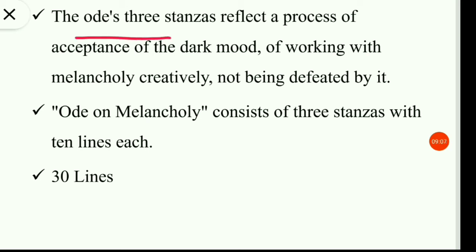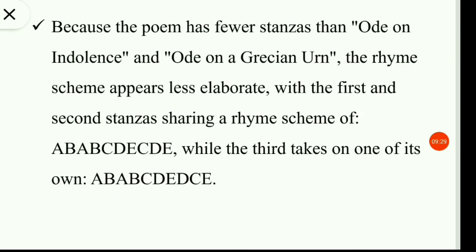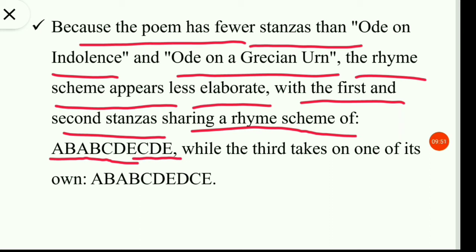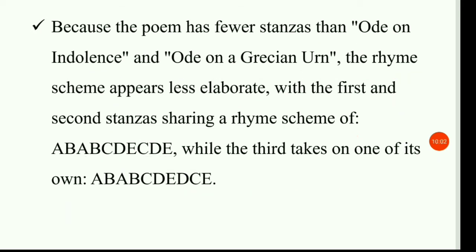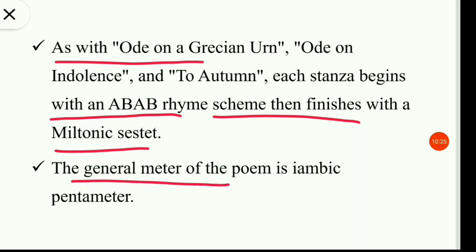The ode's three stanzas reflect a process of acceptance of the dark mood — of working with melancholy creatively, not being defeated by it. Ode on Melancholy consists of three stanzas with ten lines each, altogether 30 lines. The first and second stanzas share a rhyme scheme of A-B-A-B-C-D-E-C-D-E, while the third takes on one of its own: A-B-A-B-C-D-E-D-C-E. As with Ode on a Grecian Urn, Ode on Indolence, and To Autumn, each stanza begins with an A-B-A-B rhyme scheme then finishes with a Miltonic sestet. The general meter of the poem is iambic pentameter.